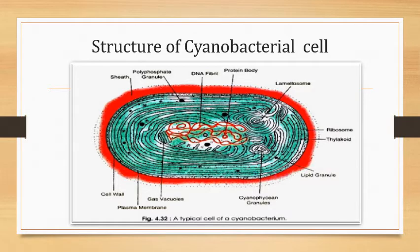Now coming to the ultrastructure of the cyanobacterial cell. In this slide you can see first is the mucilaginous sheath. The cell and filament of most cyanobacteria are generally surrounded by a mucilaginous sheath whose thickness, pigmentation, consistency and nature is greatly influenced by environmental factors. Beneath the mucilaginous sheath there is a cell wall, which is similar to the bacterial cell wall — that is, it is made up of peptidoglycans.